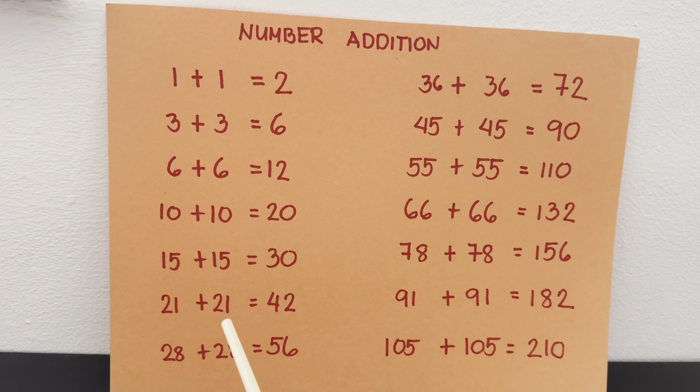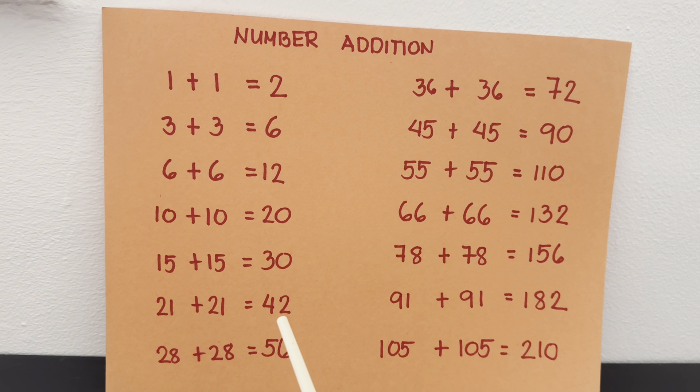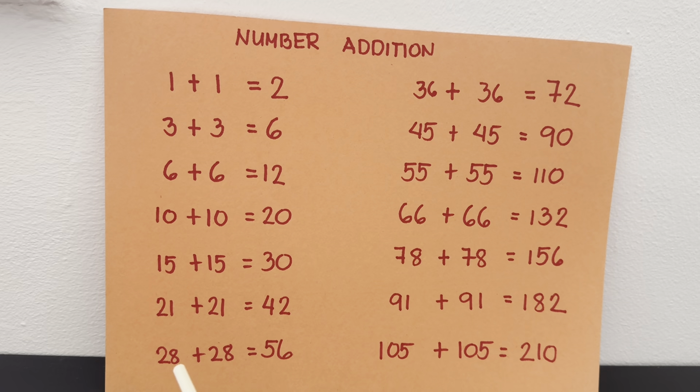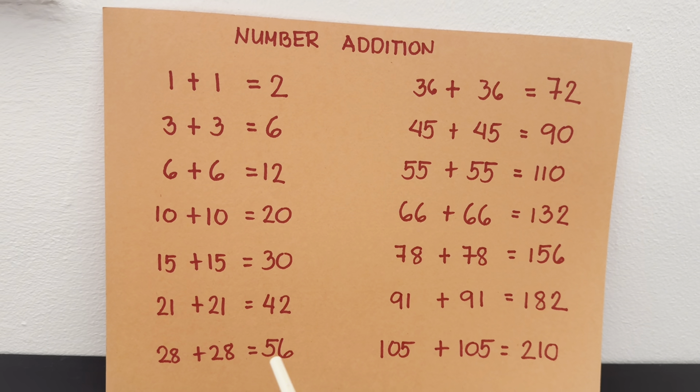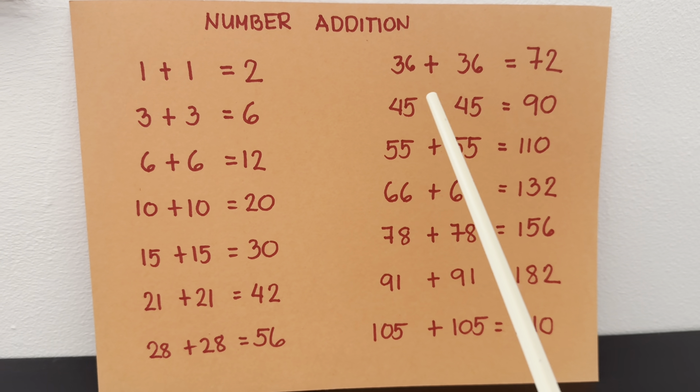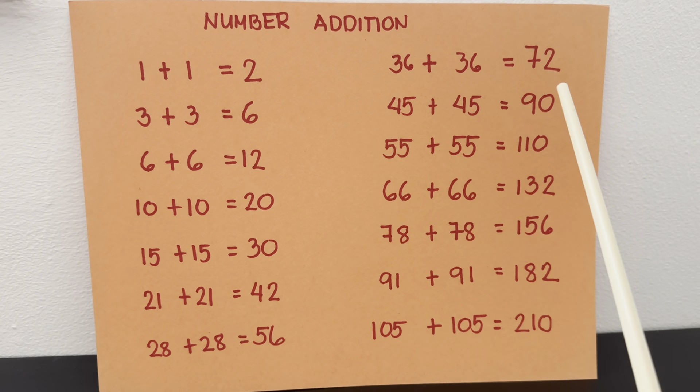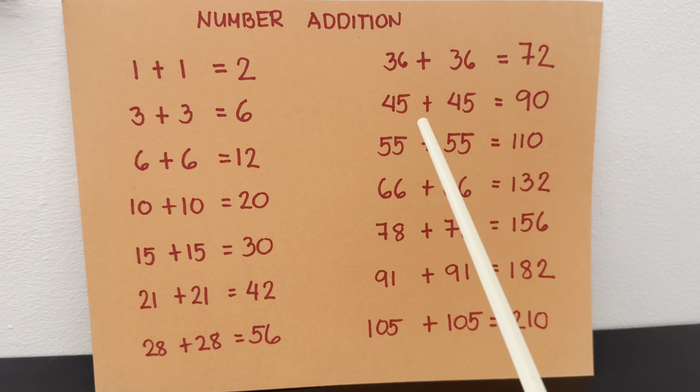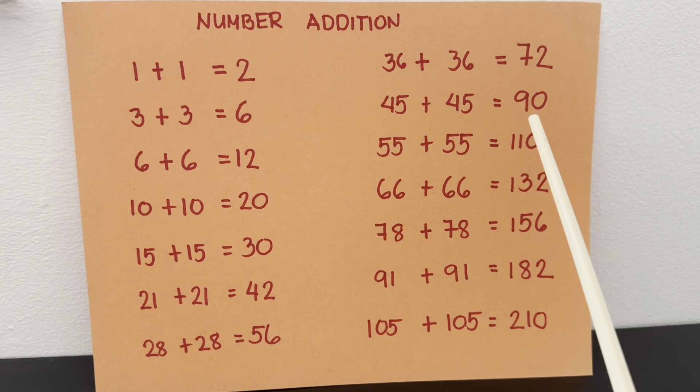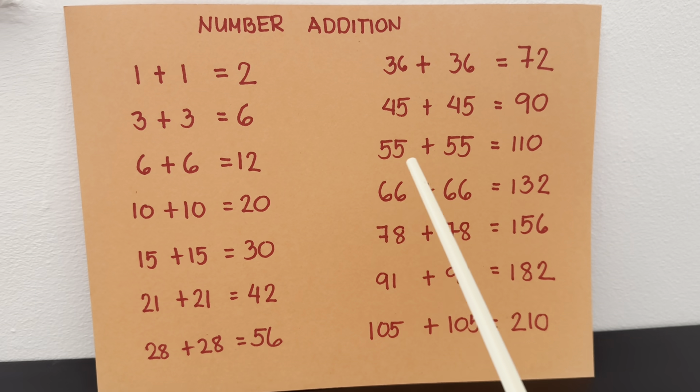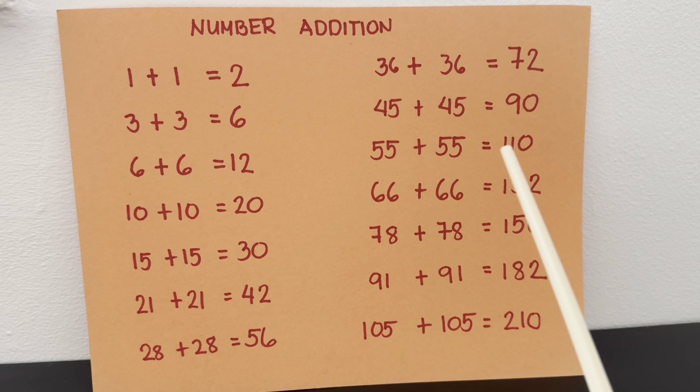21 plus 21 equals 42, 28 plus 28 equals 56, 36 plus 36 equals 72, 45 plus 45 equals 90.